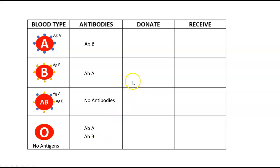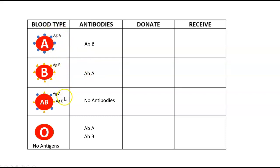Now let's talk about who can donate and who can receive blood. When you donate blood to another individual, you're only giving them the packed RBCs — the antibodies are filtered out, so they only receive the antigens on the RBCs. Blood type A with antigen A can donate to itself, but not to B (antibody A will attack it) and not to O (antibody A will attack it). So blood type A can only donate to itself and to AB.